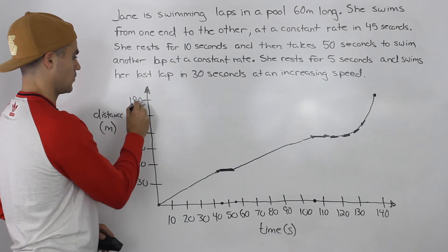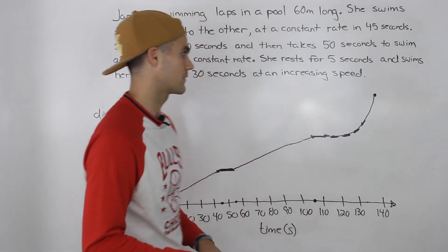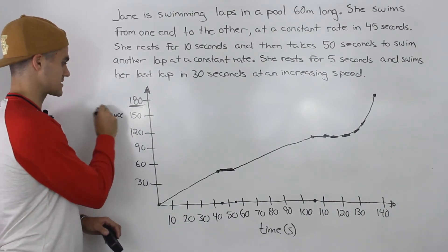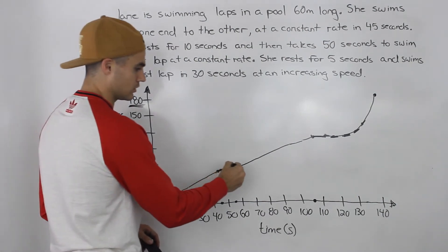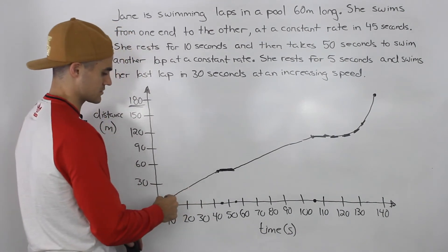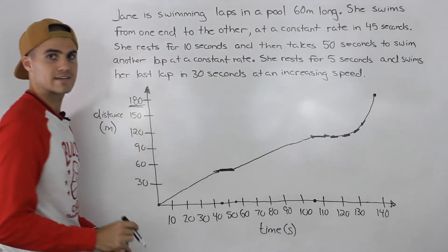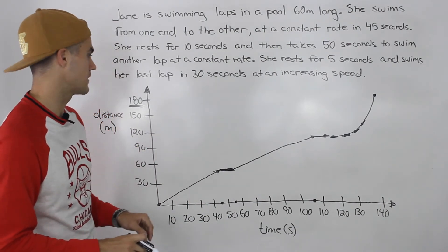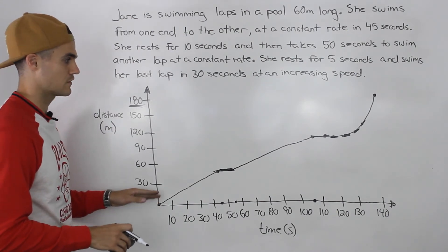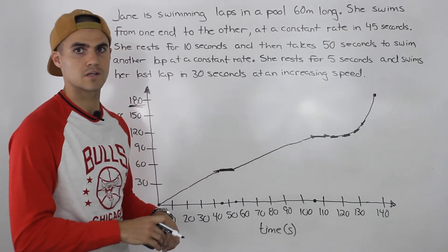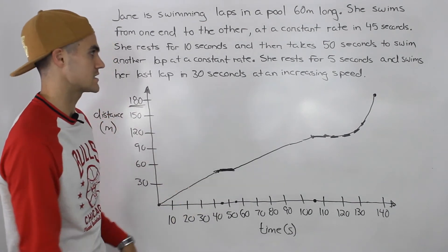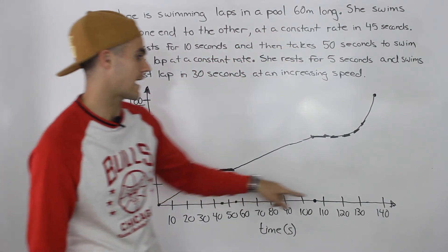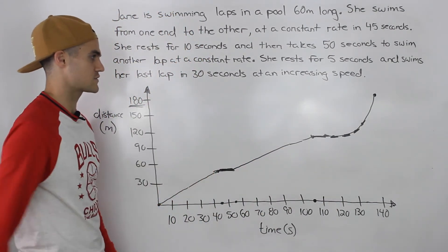The graph takes us to a total distance of 180 meters at the 140 second mark. Notice this is a distance versus time graph, not a displacement from starting position graph — that would look more like hills going up and back down. Because this is a distance graph, it's always increasing whenever she swims, since she's always covering extra distance. She swam three lengths, each 60 meters, covering 180 meters total in 140 seconds. That is the distance versus time graph for Jane, and Part A is complete.